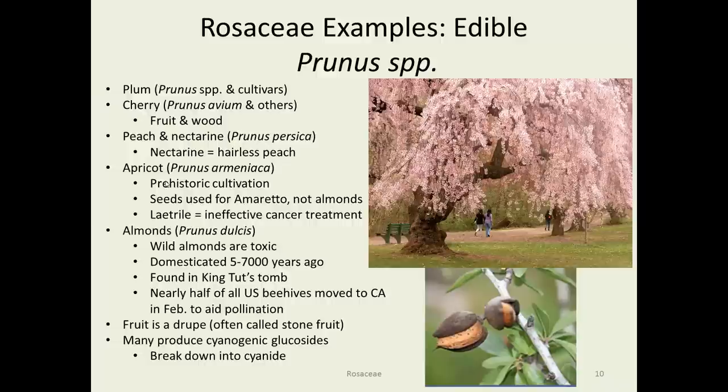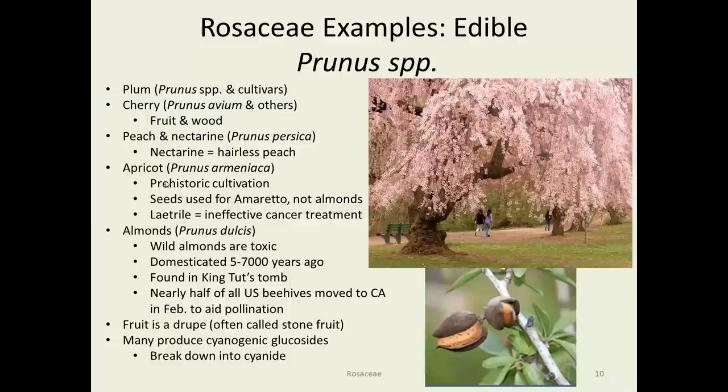The fruit of Prunus is called a drupe, whereas apples are pomes. These Prunus fruits are also called stone fruits. The toxic element in almonds and other members of this genus are cyanogenic glucosides, which break down into cyanide — obviously not a good thing.